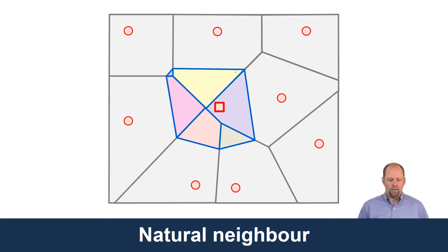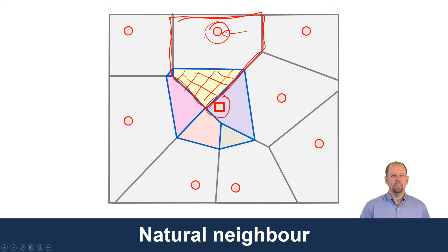For example, this is the original Thiessen polygon, and now we've cut out this yellow part. If we're going to estimate the value of this point and use this point up here as part of that estimation, we're going to use the area of this yellow part to weight the value from this point up here.